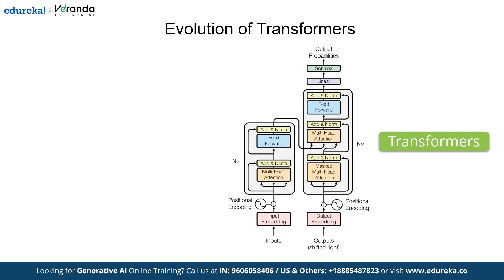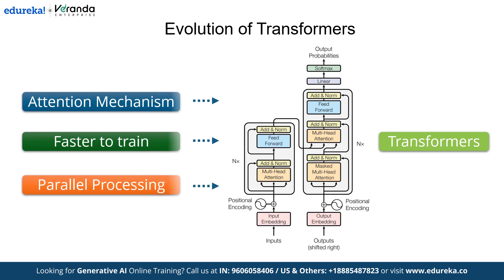Transformers addressed all the problems faced by RNNs and LSTMs. They used a completely attention-based mechanism, eliminating reliance on recurrence. This made transformers capable of remembering context efficiently, training faster, and being parallelized, enabling multitasking and significantly speeding up processes.